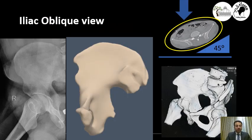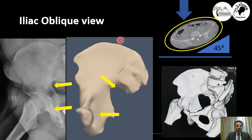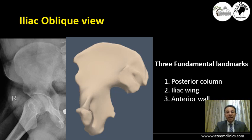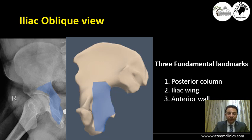The iliac oblique view is done by turning the patient 45 degrees externally. The best possible view shows a full picture of the greater sciatic foramen and nothing of the obturator foramen. Three fundamental landmarks can be identified on this view: the posterior column, the iliac wing — which is why it's named the iliac oblique — and the anterior wall.